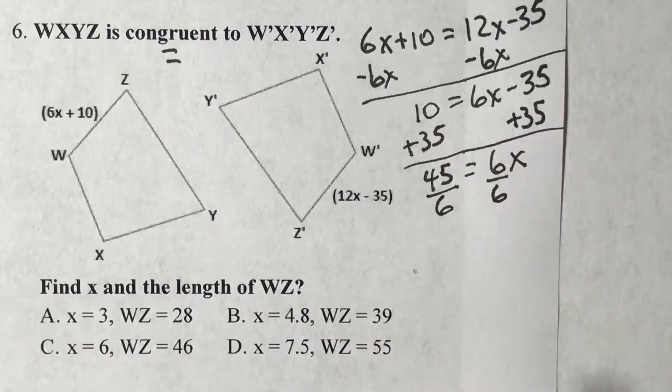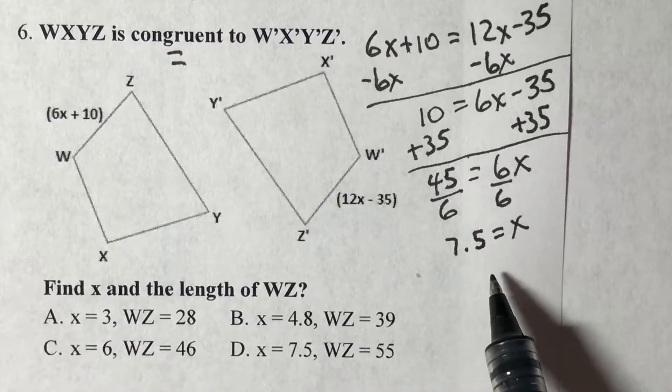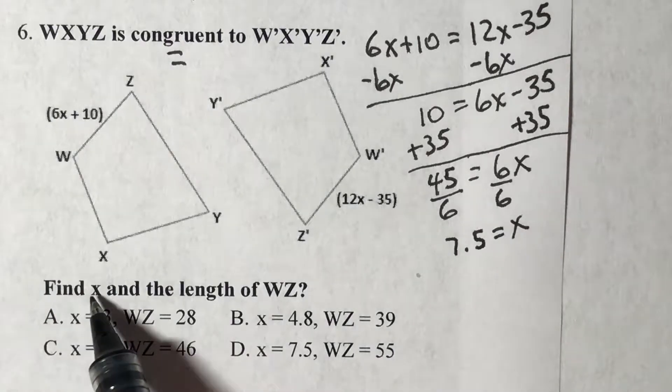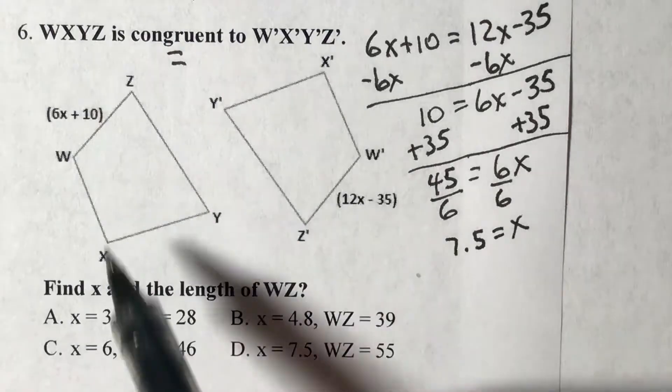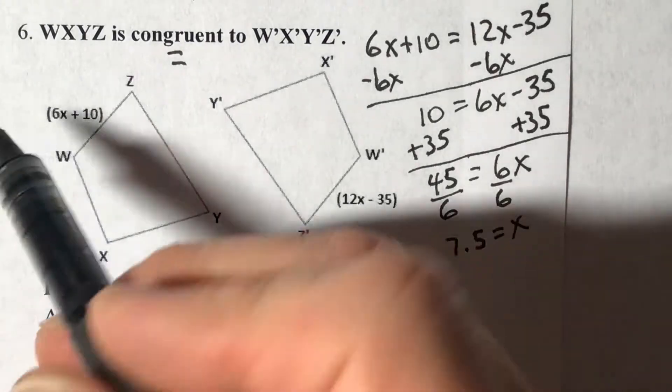Divided by 6, X equals 7.5. It's asking us to find X and the length of WZ.